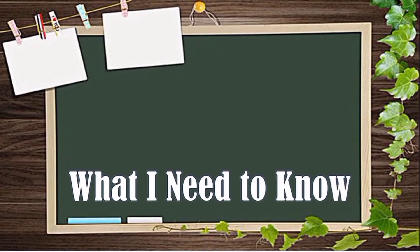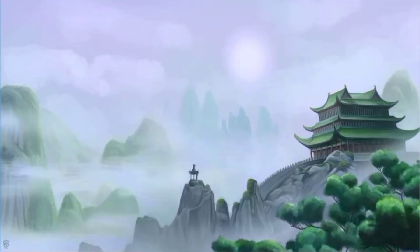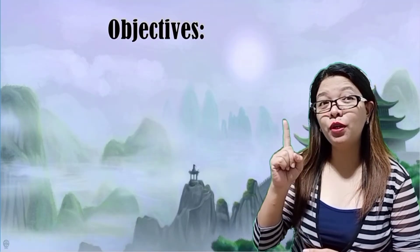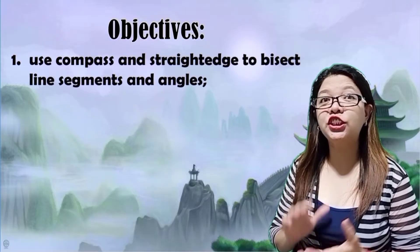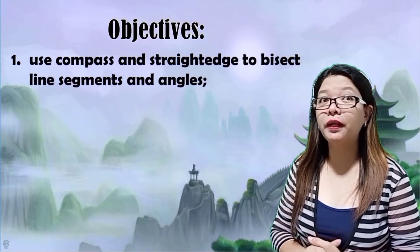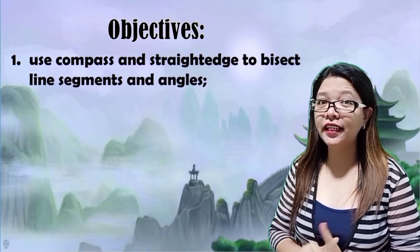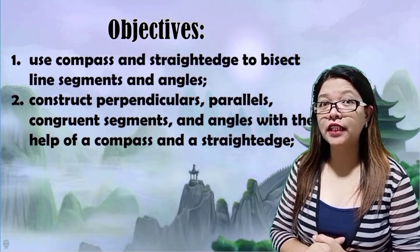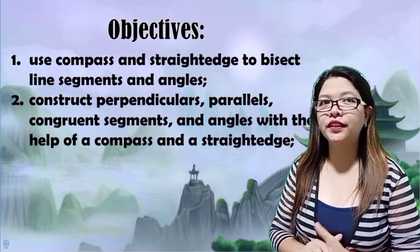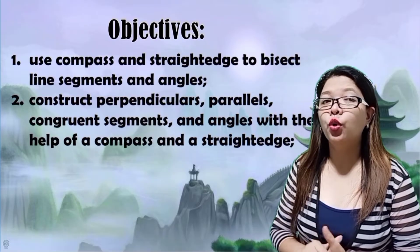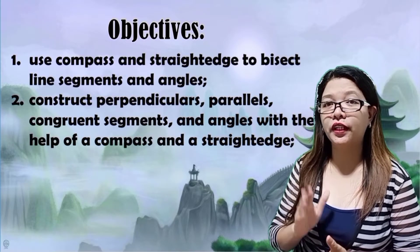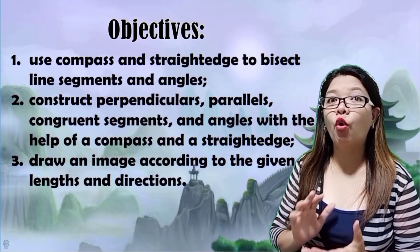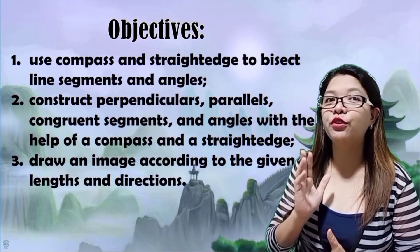What I Need to Know. Here are our objectives. Number 1: Use compass and straightedge to bisect line segments and angles. Number 2: Construct perpendiculars, parallels, congruent segments, and angles with the help of compass and straightedge. Number 3: Draw an image according to the given lengths and directions.